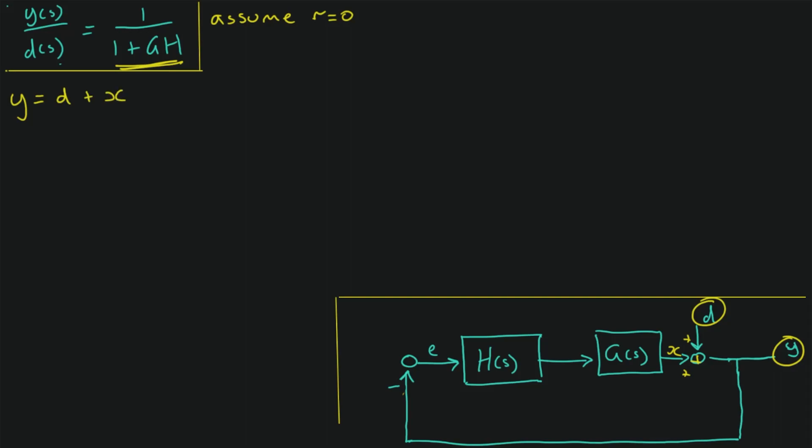And as we did last time, we can see here that X is equal to, working right to left, G times H times E. And in this case, our error E is simply minus Y. So E is equal to minus Y.